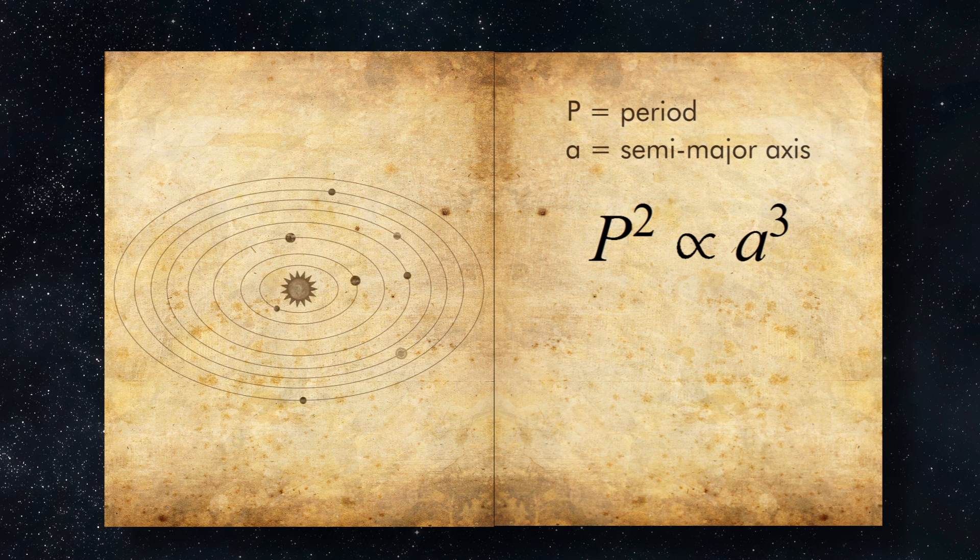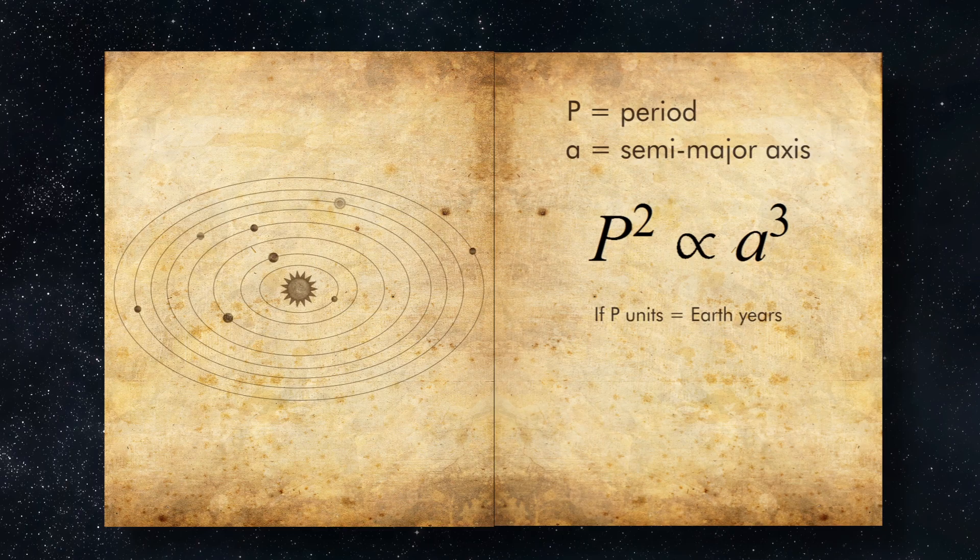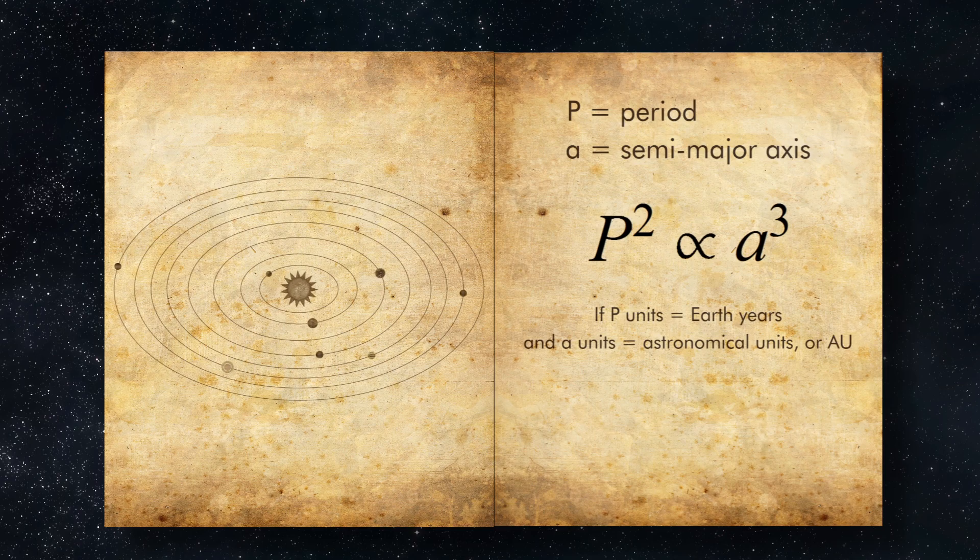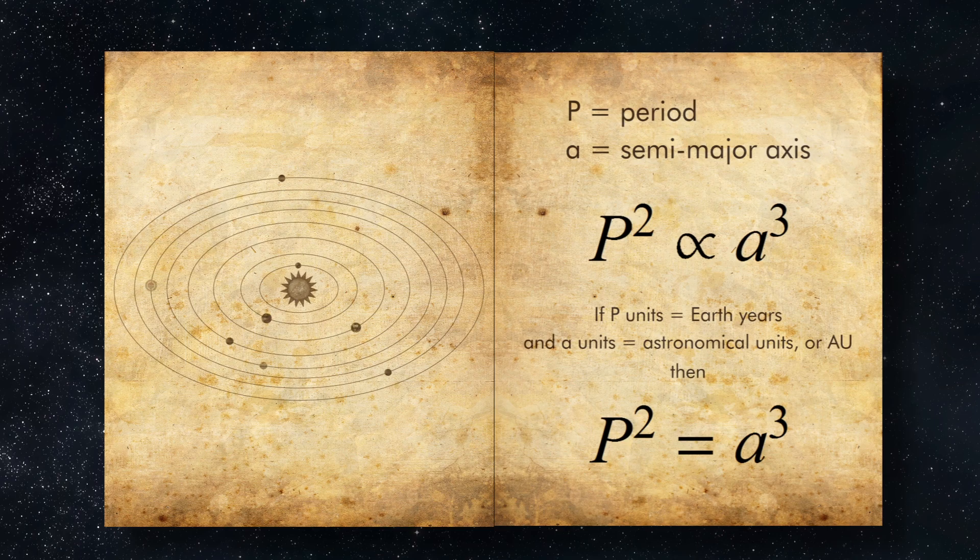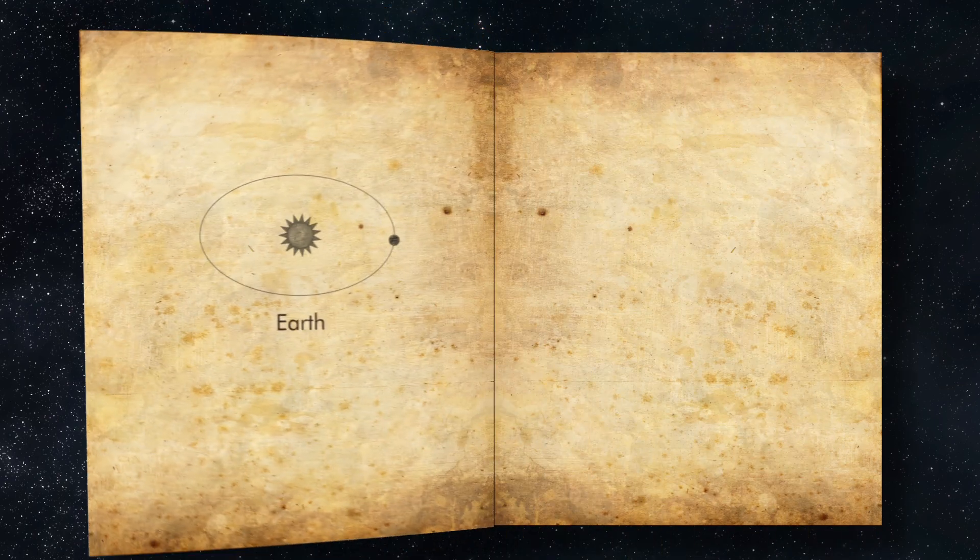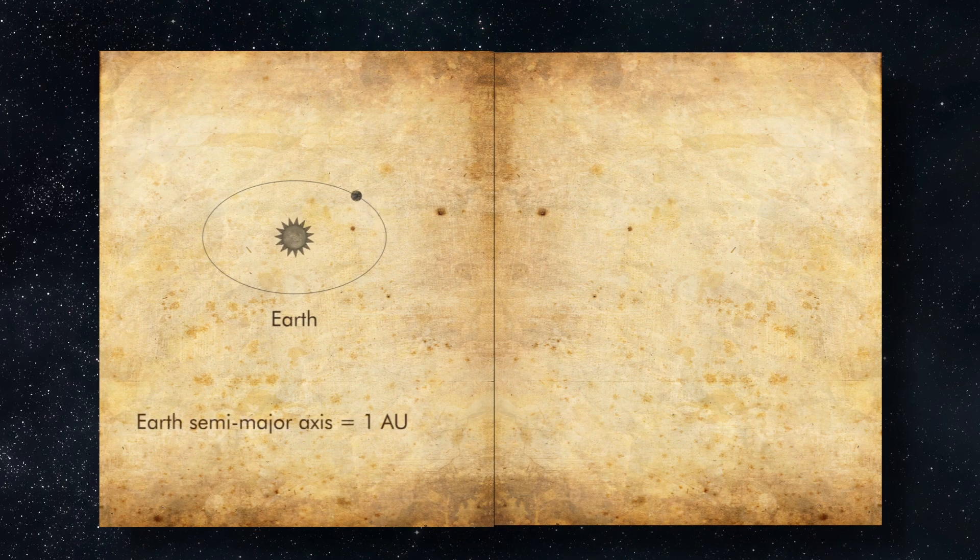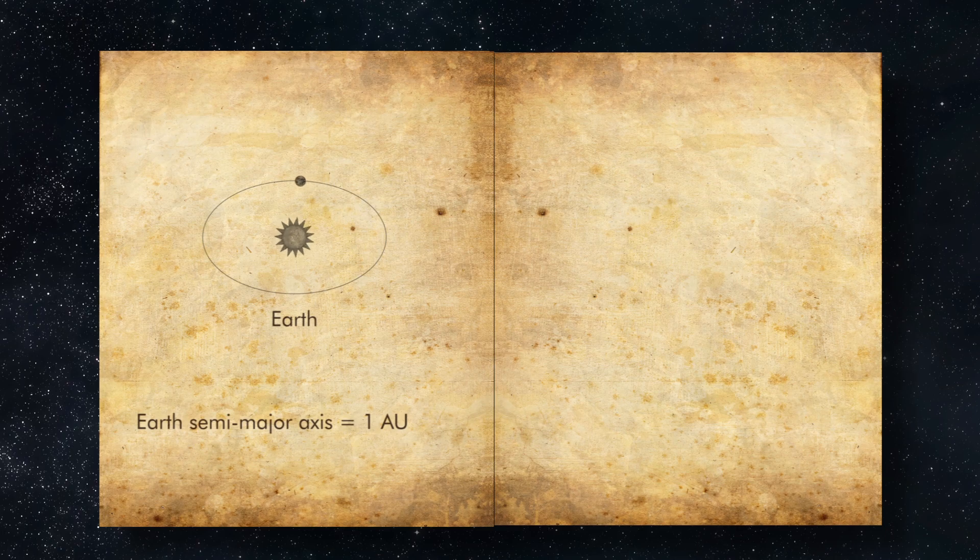In fact, if we choose our units carefully with the period in years, the time it takes for Earth to go once around the Sun, and the semi-major axis in astronomical units, the proportionality becomes an exact equation. The square of the period is equal to the semi-major axis cubed.